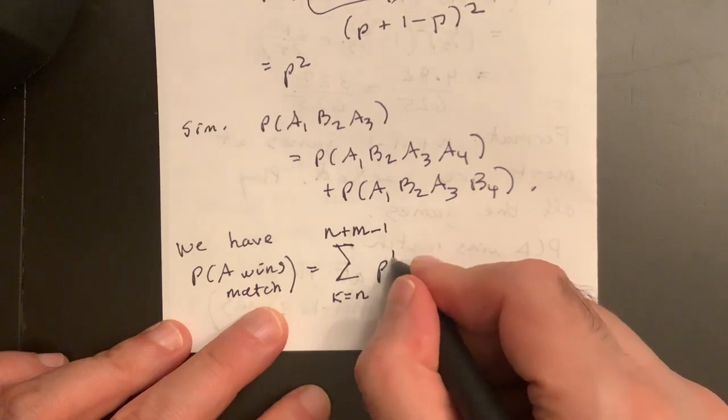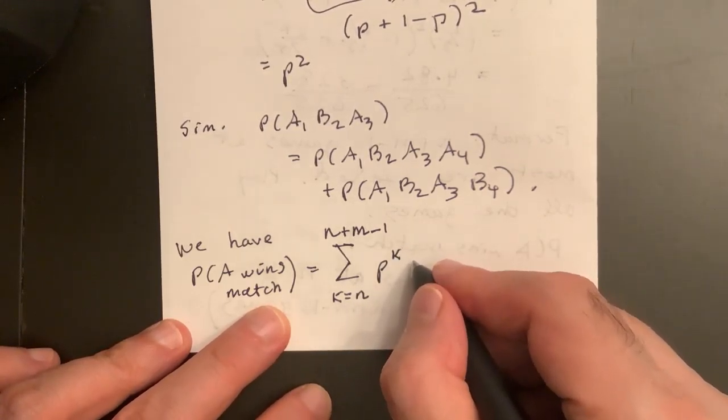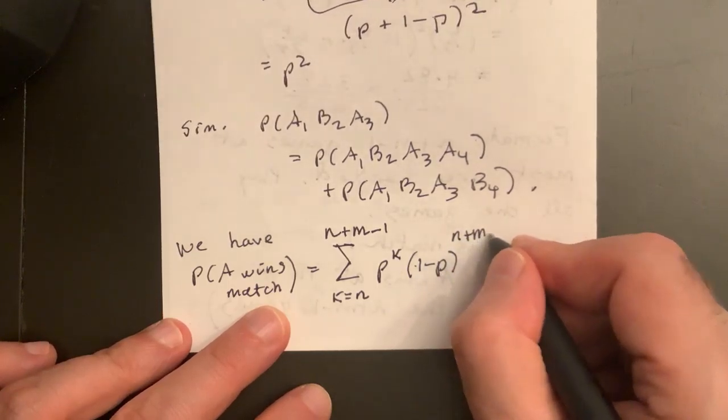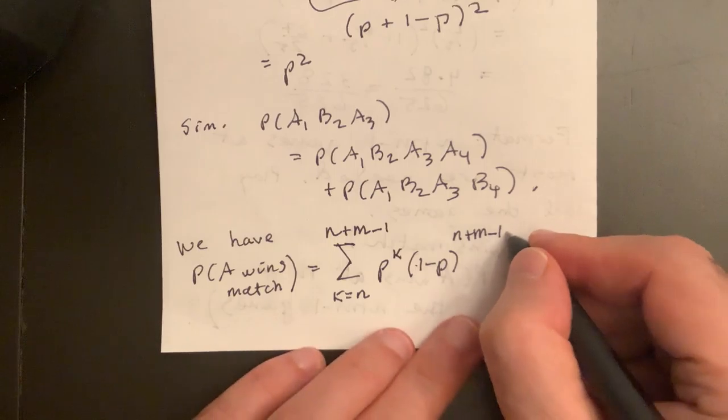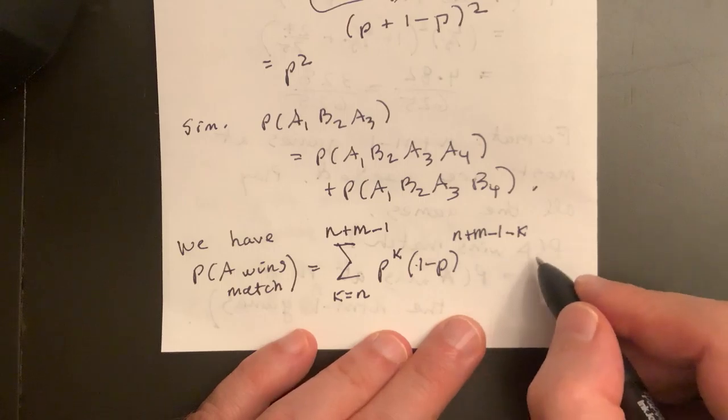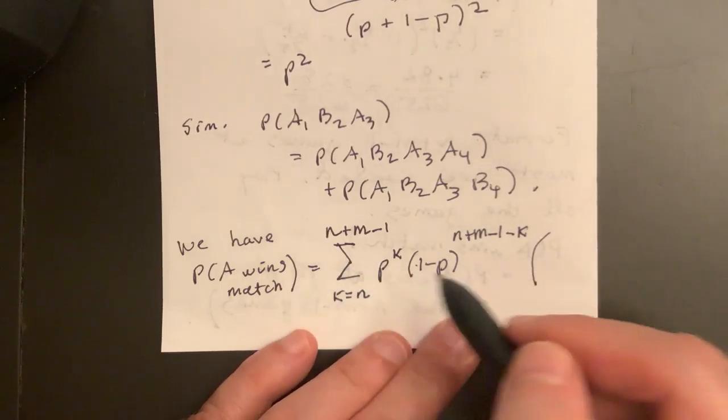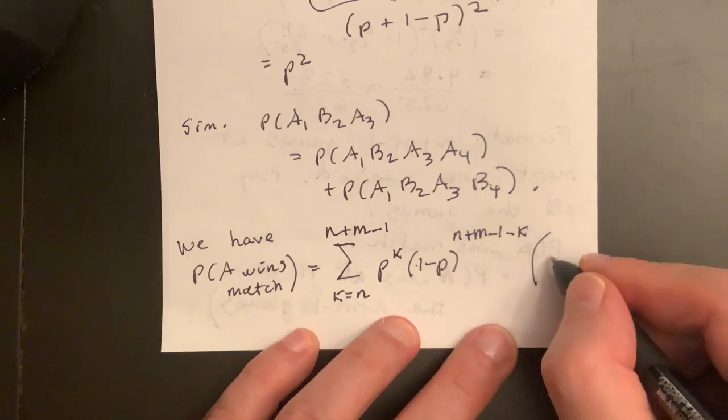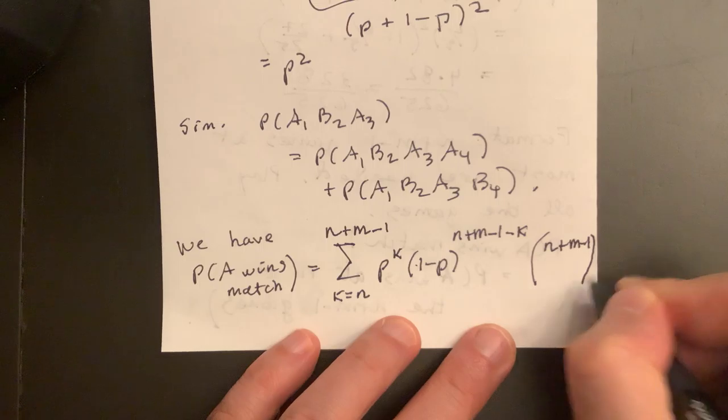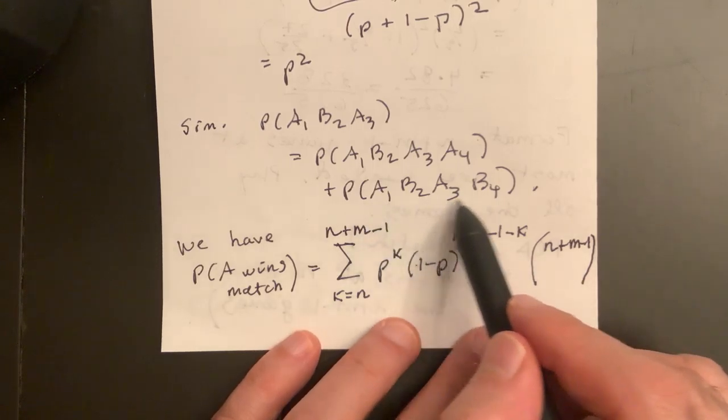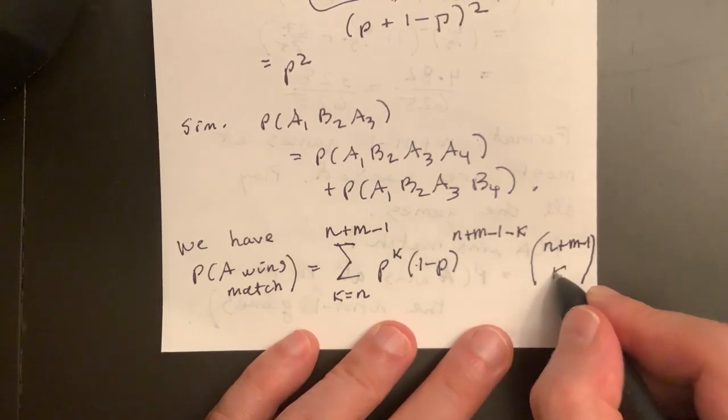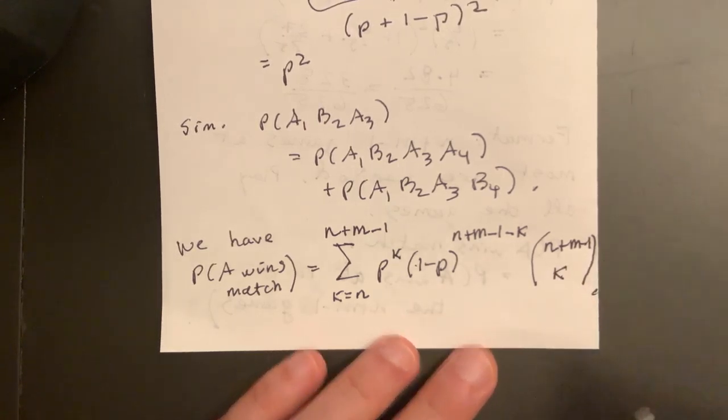Okay, and now we have P to the K, at least N, times one minus P to the N plus M minus one minus K. And all the different ways this can happen. So this would be, and I'm putting the binomial coefficient in the wrong place. Usually I put it over here, right? This would be N plus M minus one. Of these N plus M minus one games, how many ways can the player A win K of them, right? So that's the formula from Fermat.